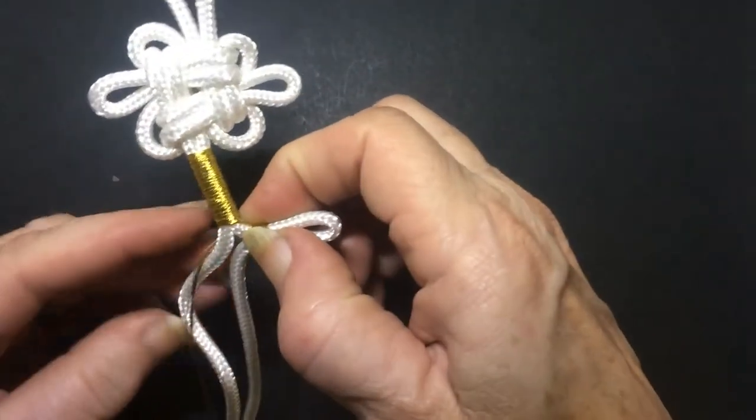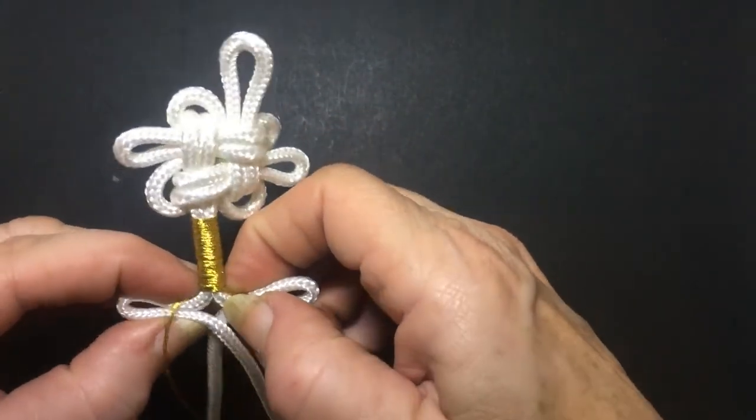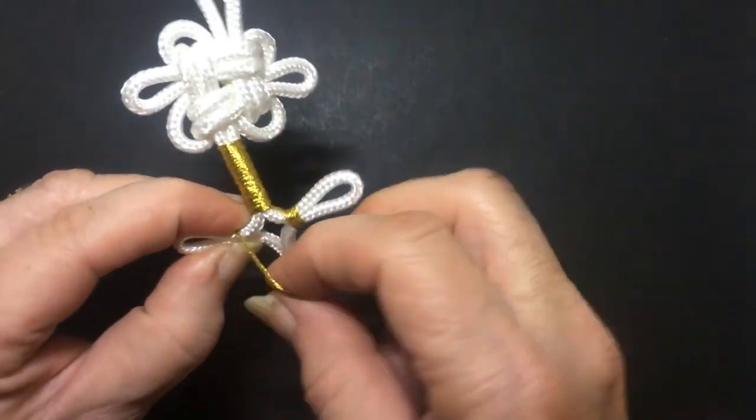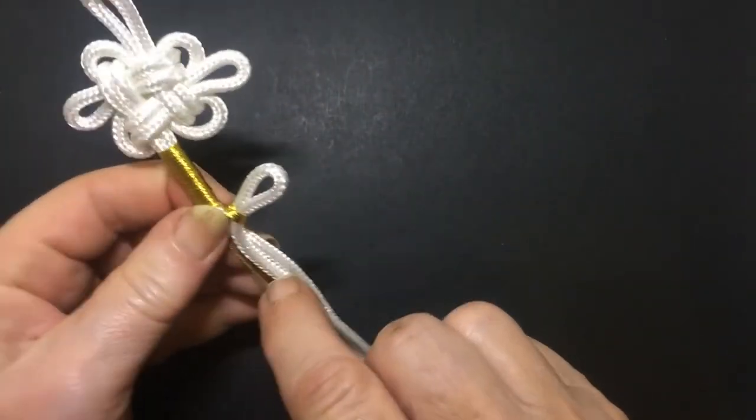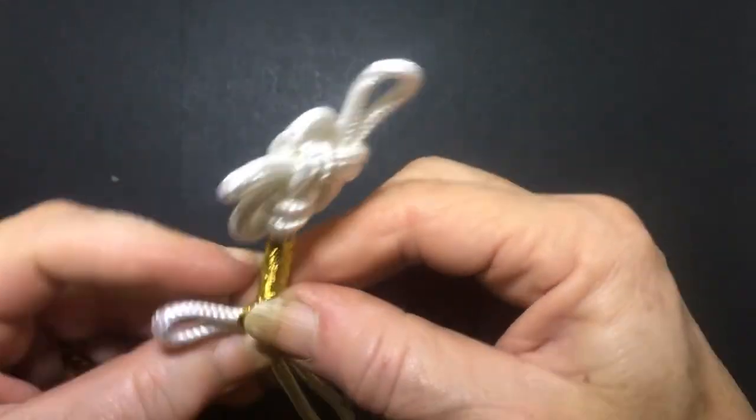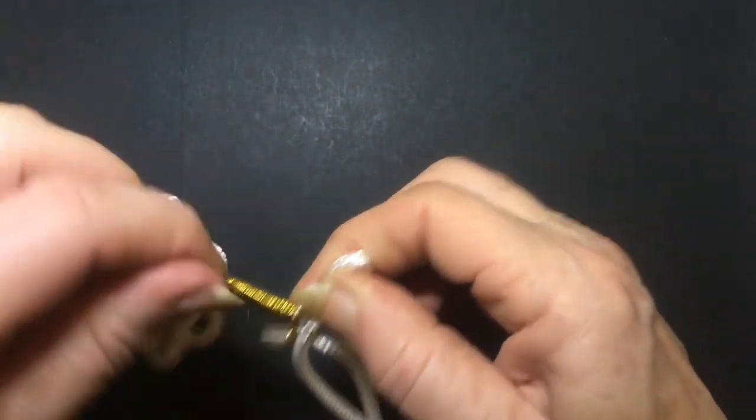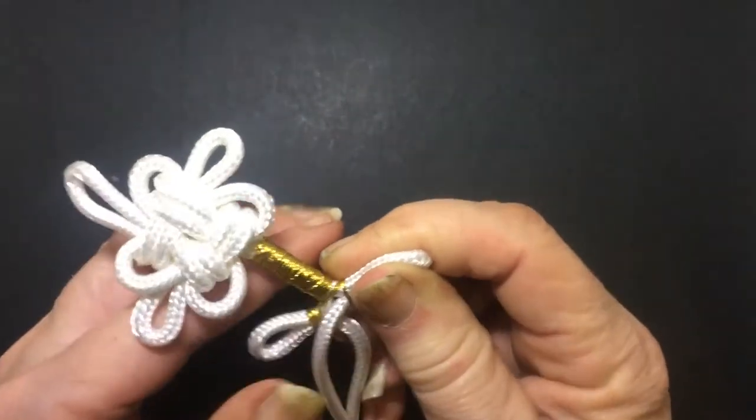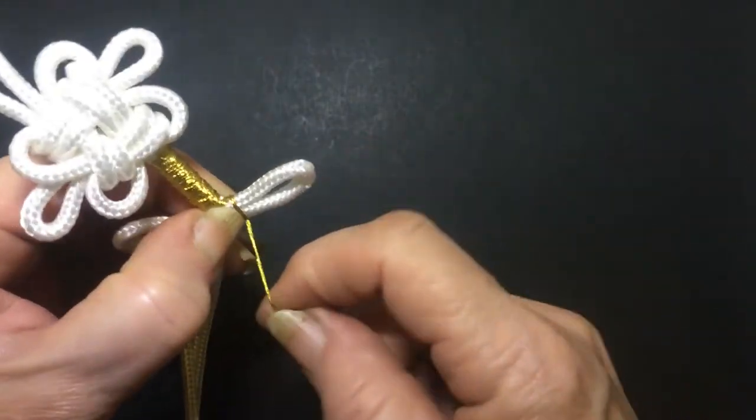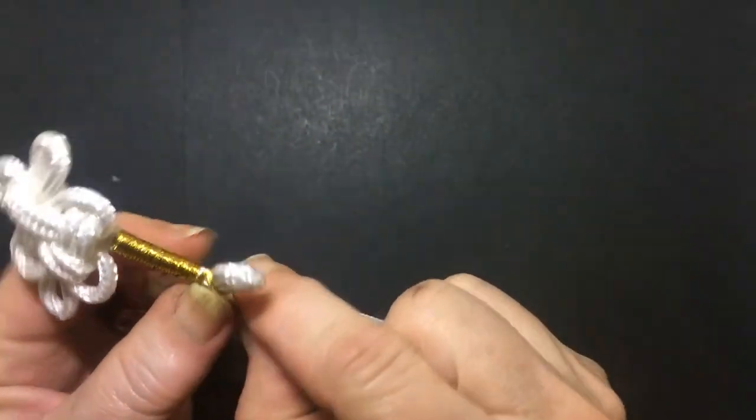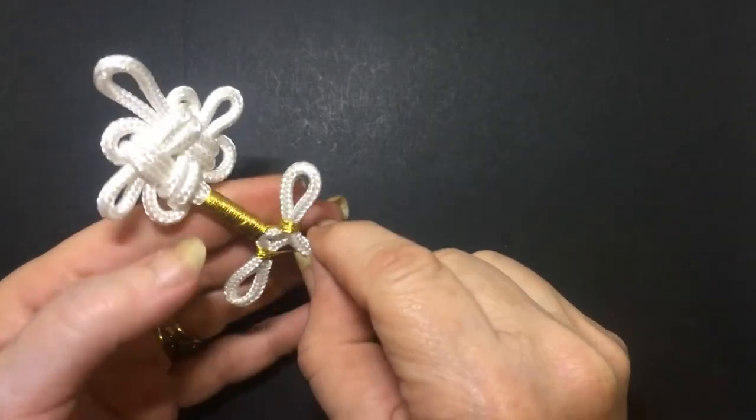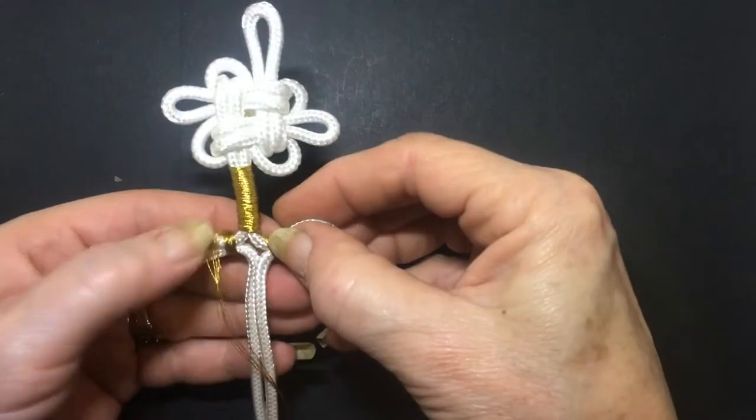So you're going around three times and then go around the back again and onto the other side and go around that three times as well. And then you're back in that position.